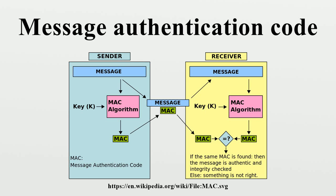Informally, a message authentication code consists of three algorithms. A key generation algorithm selects a key from the key space uniformly at random. A signing algorithm efficiently returns a tag given the key and the message. A verifying algorithm efficiently verifies the authenticity of the message given the key and the tag — that is, returns accepted when the message and tag are not tampered with or forged, and otherwise returns rejected.